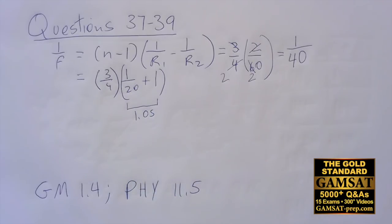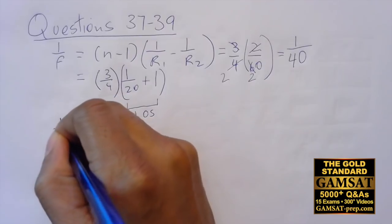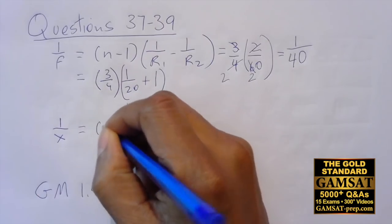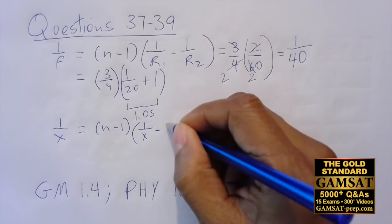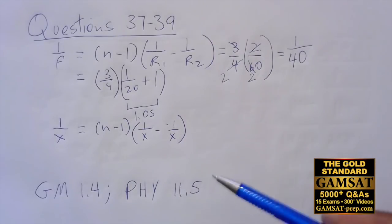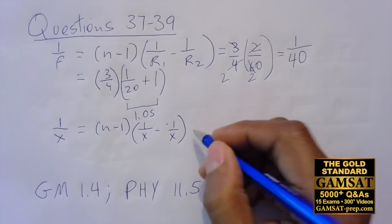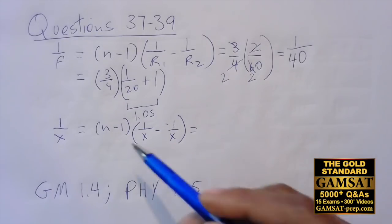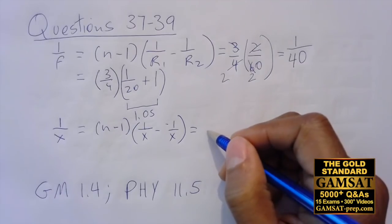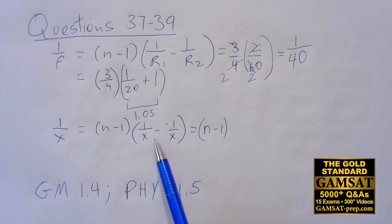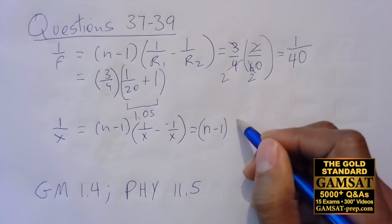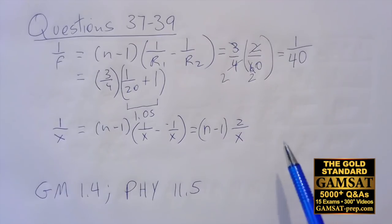Let's just write it out. 1 over x is going to equal n minus 1, and then 1 over x minus a negative 1 over x, just like we've done it before. This has to be negative because it's r2 and that one was positive. So we have n minus 1, and we have a common denominator here already, so we have 1 over x plus 1 over x, so that's just going to be 2 over x.